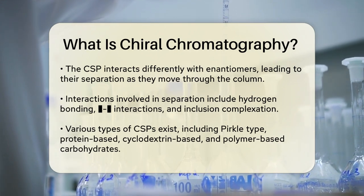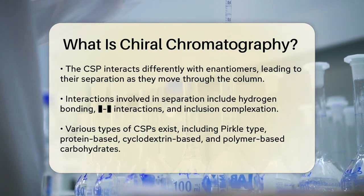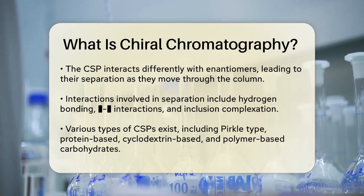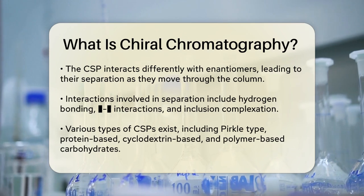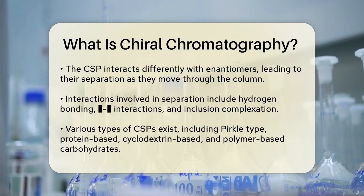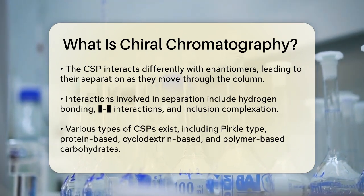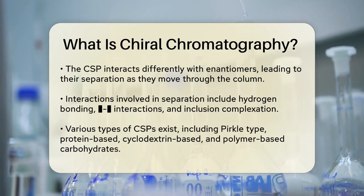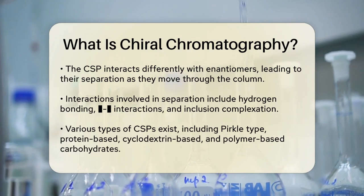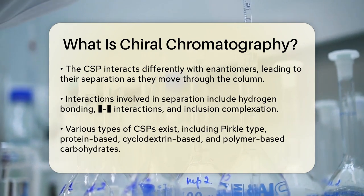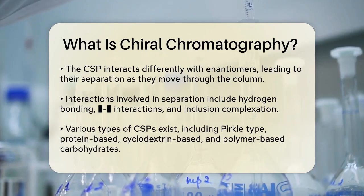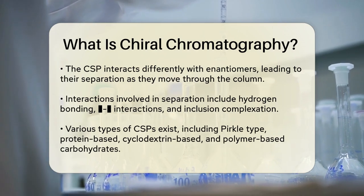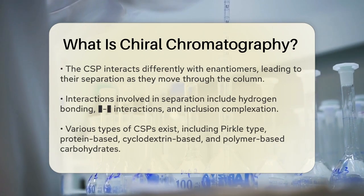These interactions form temporary diastereomeric complexes, which allows the enantiomers to be separated as they pass through the column. There are several types of chiral stationary phases, such as percal-type or brush-type, protein-based, cyclodextrin-based, and polymer-based carbohydrates.